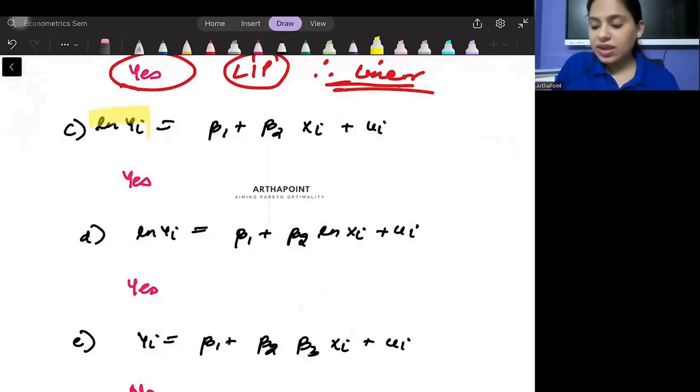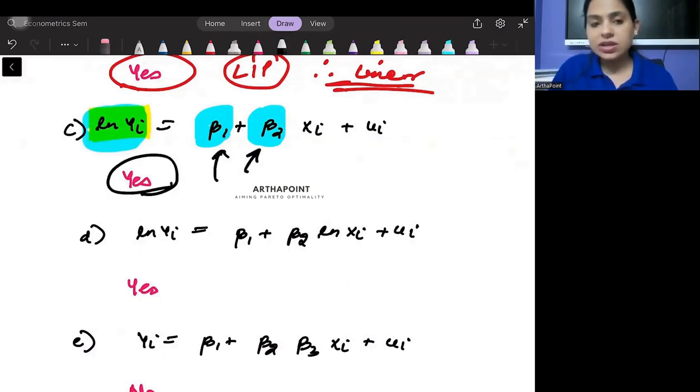Okay, look into the third one. Now, here is ln yi. But it does not matter. We can clearly see that the betas are coming in the linear format. And therefore, it will be a linear in parameter model. And hence, linear. So, it does not matter that yi is coming in the log form. As long as it is linear in parameter, it will be a linear model.